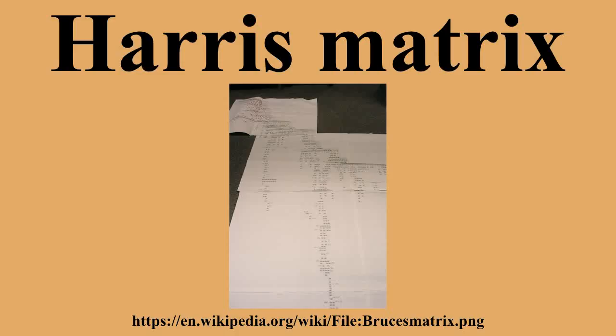Also note the matrix splits into two parts below construction cut 5. This is because the relationships across the section have been destroyed by the cutting of construction cut 5, and even if layers 1 and 4 are probably the same deposit, this cannot be guaranteed from this section alone. However, the position of cut 5 and natural layer 11 ties the matrix together above and below the split.